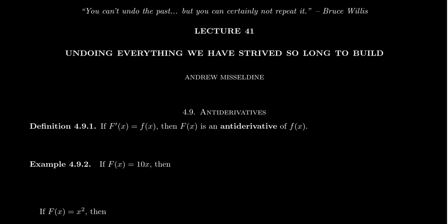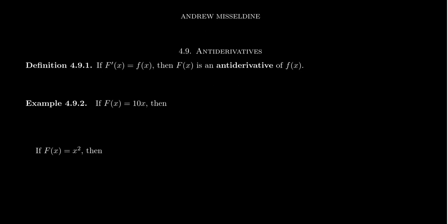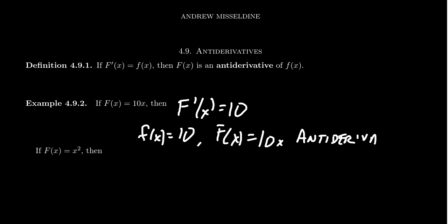And so a quick example of that, let's take the function capital F of x equal 10x. Then we know that if we take the derivative of this thing, well, that will just be 10. So if we take little f of x to be the constant function 10, then this tells us that its anti-derivative capital F of x would equal 10x. And so this is an anti-derivative for the function little f of x. And so we're reversing the derivative process that we saw earlier.